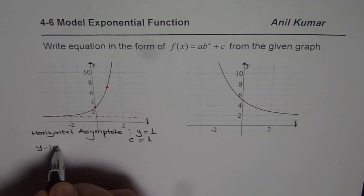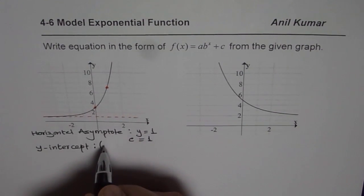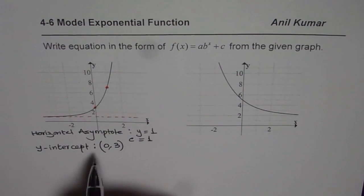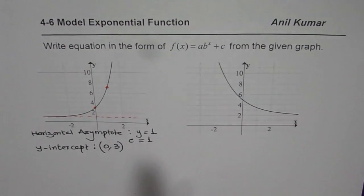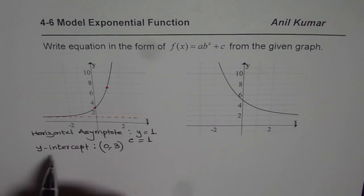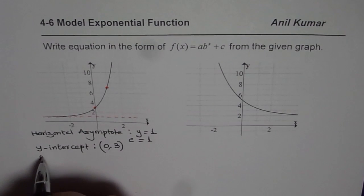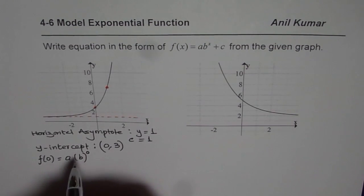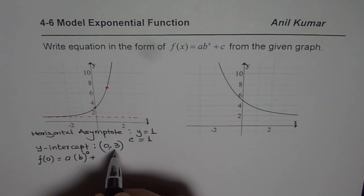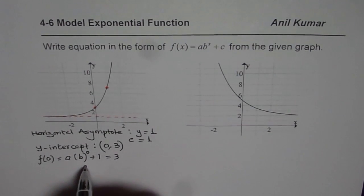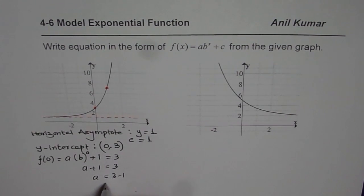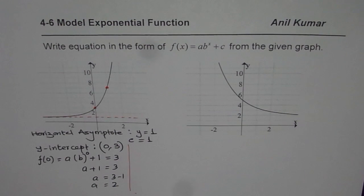Then we identified the y-intercept. The y-intercept is x = 0 and y = 3. When you substitute x = 0 into the equation, anything to the power of 0 gives you 1, so you can get the value of a. In our function, substituting x = 0 gives us a·b^0 + c. With c = 1 and f(0) = 3, we get: a + 1 = 3, so a = 3 − 1 = 2.